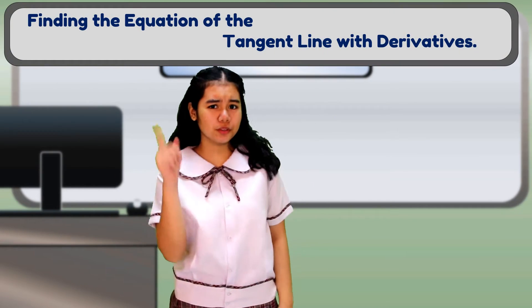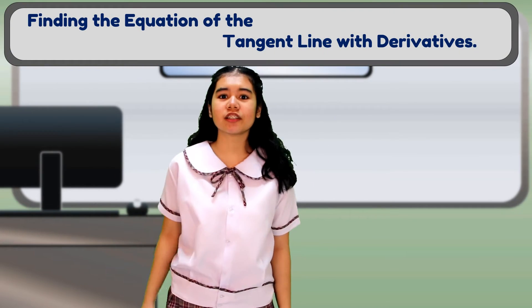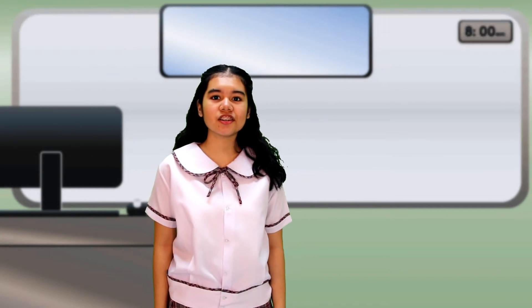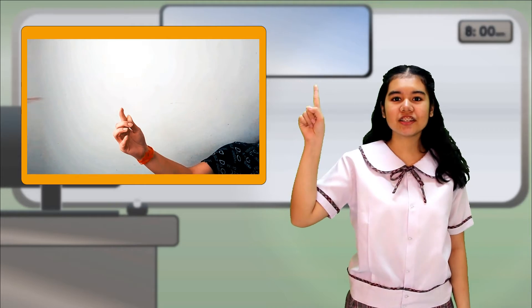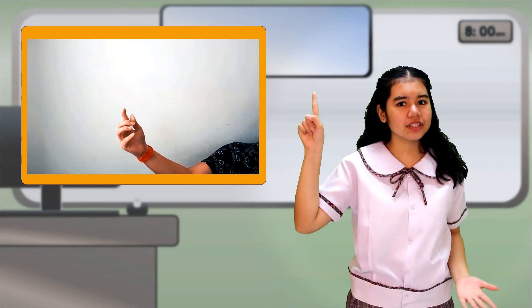Hey there! Do you know that an object that moves in a circular motion like this flies off in a straight direction when you let it go? Do you know why?